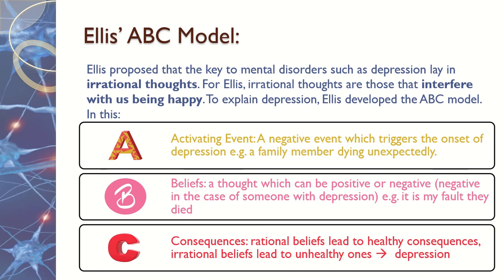That's really important. Make sure that when you're referring to an example of depression, the consequence is always depression itself. Ellis' ABC model isn't just about explaining depression but also about how normal or rational people would respond to a situation. When phrasing this for an exam question, be clear whether you're referring to a rational or irrational belief, and a rational or irrational consequence. The activating event is neither — it's just neutral.